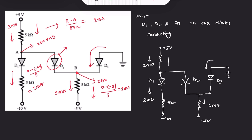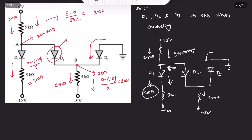Applying Kirchhoff's Current Law, the incoming current at the node is only 1 mA from D3, but D1 requires 2 mA flowing through it. This means we would expect an inward current at that node, which would require current flowing through D2 in the reverse direction — contradicting our assumption. So D2 is clearly reverse biased.